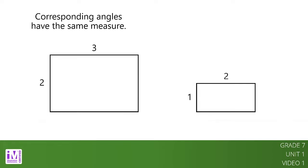Here are two rectangles. Their corresponding angles have the same measures. The second rectangle is a scaled copy of the first rectangle. We still need to check the side lengths.